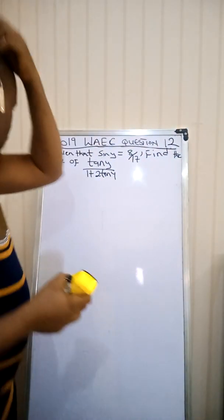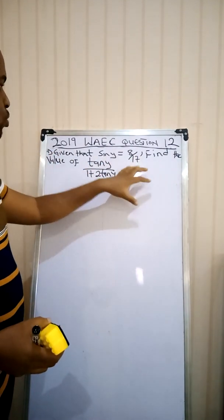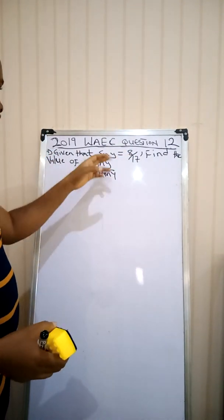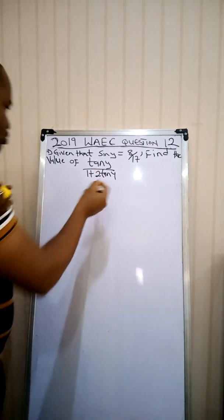Alright students, you're welcome once again to my channel. My name is Madwaka Emanuel, your favorite math teacher. We are continuing with the YX series and today we shall be looking at question 12 of the 2019 YX examination. Question 12, part A, says: given that sine Y is equal to 8 over 17, find the value of tan Y over 1 plus 2 tan Y. Let's quickly see the solution.